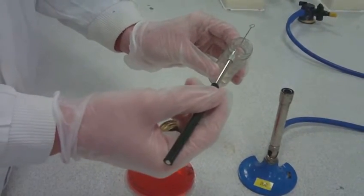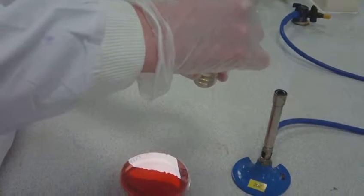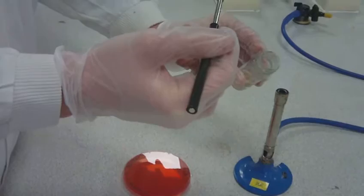Once the bottle is sterile, put the loop into the suspension without touching the sides of the bottle. Remove the loop and then re-flame the neck of the bottle before closing the lid to sterilize.